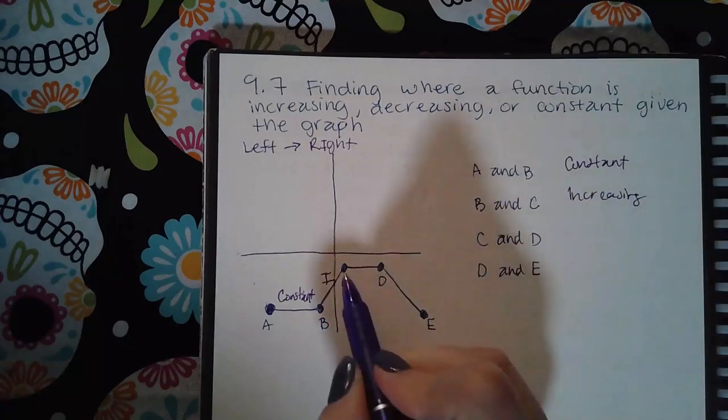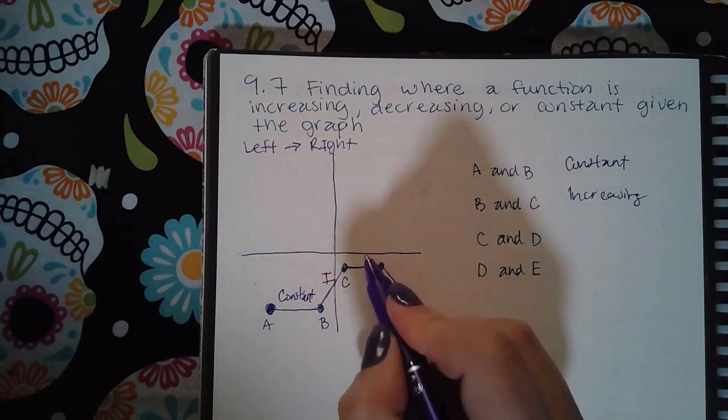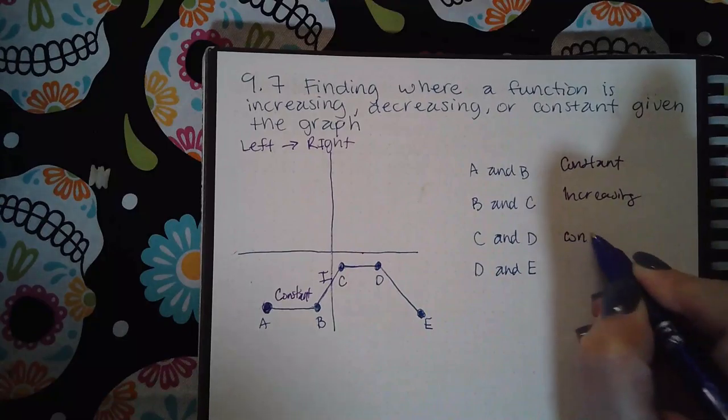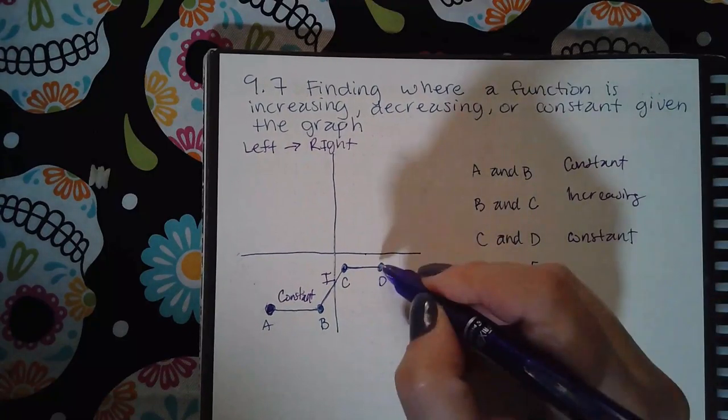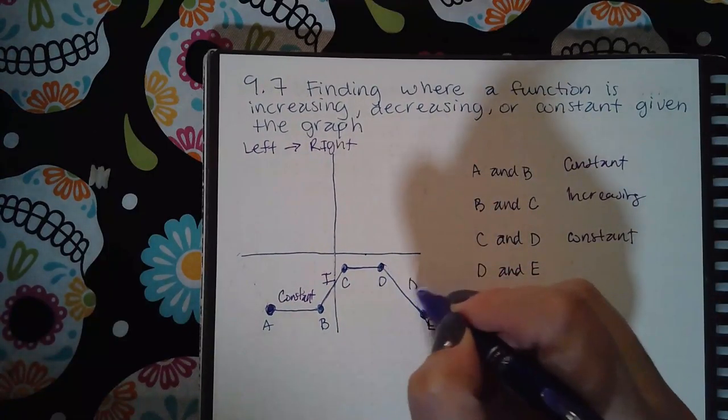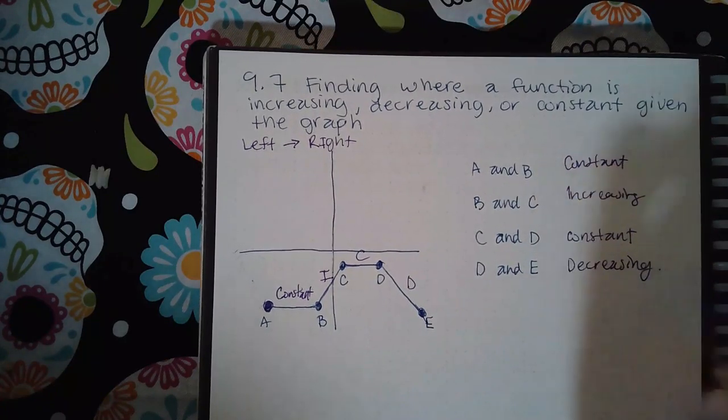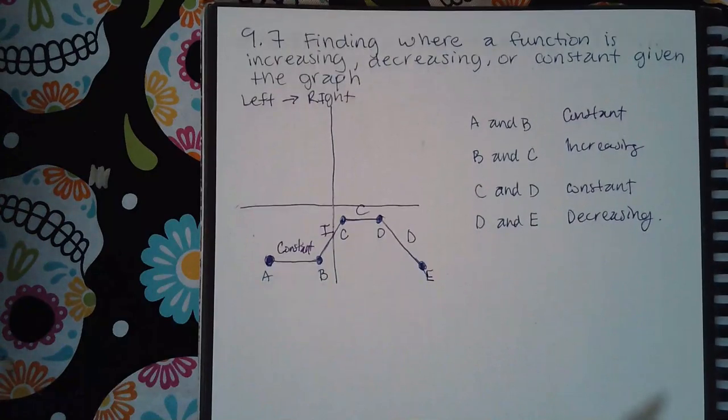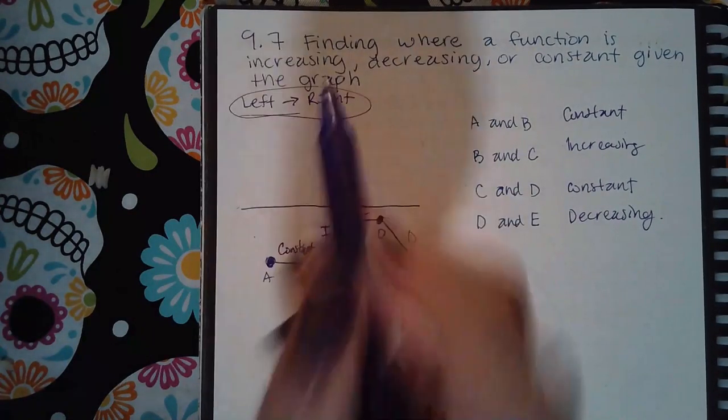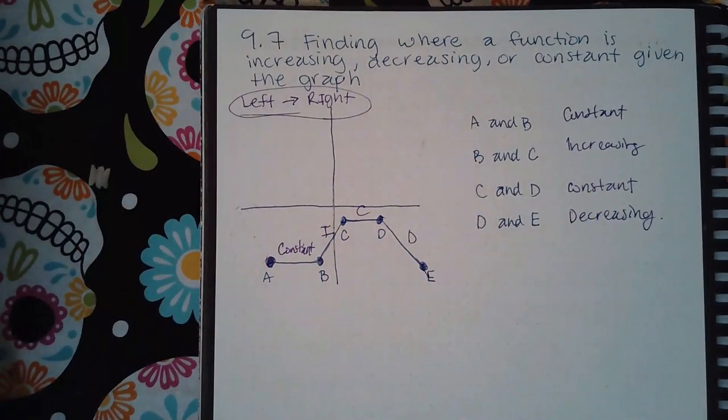Then it's increasing. Then if I keep going, it's flat again, so it's constant. And then if I keep going, it's going downward, so it's decreasing. So it's very, very important that you read from left to right.